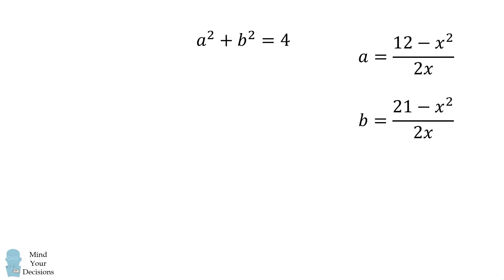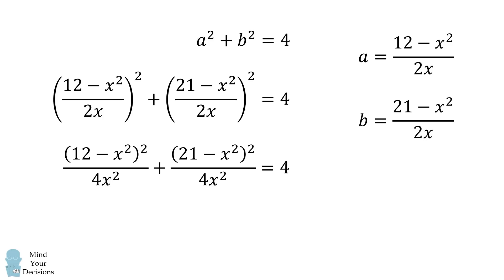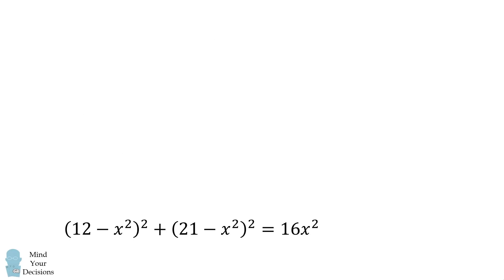We can take these expressions for a and b, and substitute that into the first equation. We end up with the following equation. We'll first simplify it, and then we'll multiply both sides by 4x squared. From here, we need to solve this equation for x squared. We know the area of the square is equal to x squared, and we'll let that be equal to u.